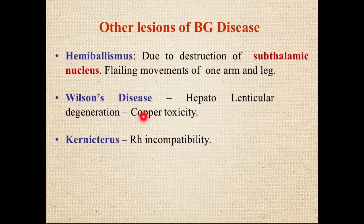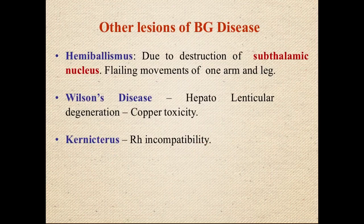In Wilson's disease, accumulated copper deposits in the liver and in the basal ganglia, causing movement disorders when the basal nuclei are affected. Kernicterus is another basal ganglia disorder — in neonatal jaundice, if bilirubin exceeds a critical level, it crosses the blood-brain barrier and deposits in the basal ganglia, causing movement disorder.